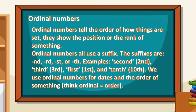Now, ordinal numbers. Ordinal numbers tell the order of how things are set — they show the position or the rank of something. Ordinal numbers all use a suffix. The suffixes are -nd, -rd, -st, or -th. For example: second, third, first, tenth. We use ordinal numbers for dates and the order of something.